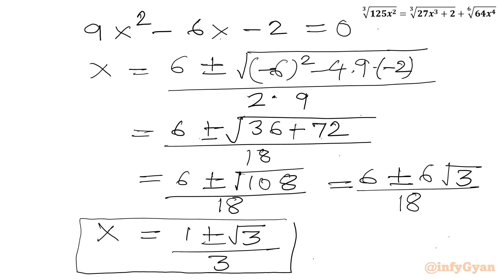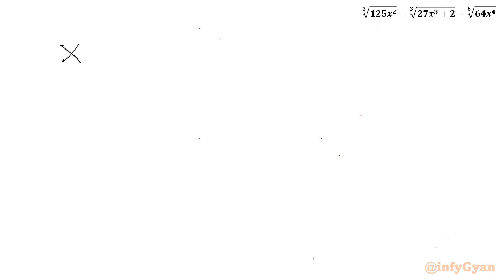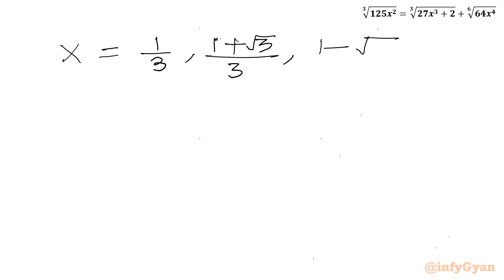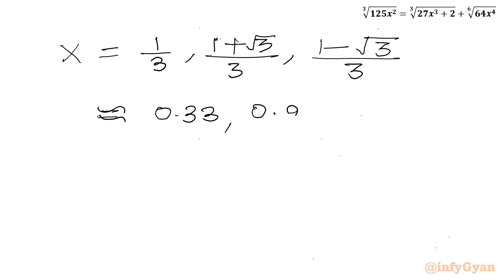So we have three real solutions overall. The first solution is our base solution x = 1/3. The second solution is x = (1 plus root 3) over 3, and the third solution is x = (1 minus root 3) over 3. The approximate values are: x ≈ 0.33, x ≈ 0.91, and x ≈ negative 0.245.